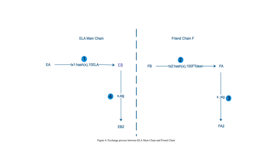Second, Bob sees transaction 1 on the Elastos mainchain and constructs transaction 2 on the friendchain to transfer 100 Ftokens from FB to FA. The unlock condition for this transaction is the signature generated by FA's private key, along with the same hash lock — the random hash number. Third, Alice provides a transaction 2 signature on the friendchain along with the random number X to unlock transaction 2, transferring 100 Ftokens to her own address on the friendchain. Fourth, Bob sees transaction 2 is unlocked and gets the random number X. Bob then signs transaction 1 with EB's private key and provides random number X to unlock transaction 1, which transfers 10 ELA to his own address on the Elastos mainchain. And that is it — the transfer has happened!